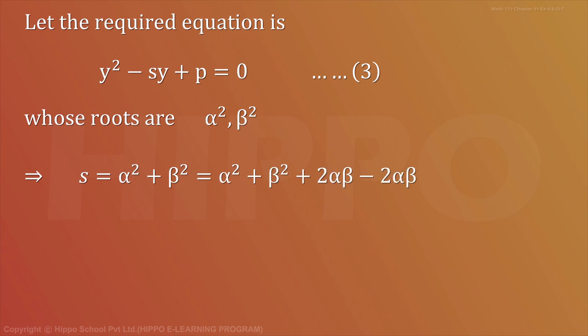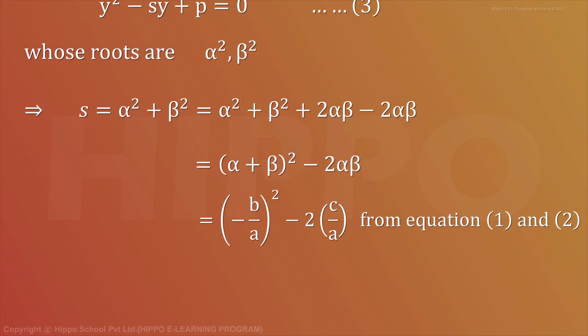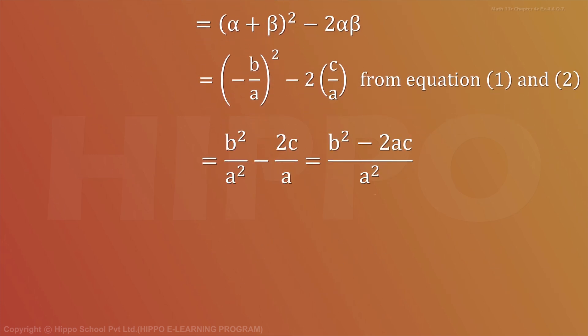تو s = α² + β², which is equal to α² + β² + 2αβ - 2αβ. ہم نے یہاں پر خود سے لکھ لیا. Equal to (α + β)² - 2αβ. α + β ہمارے پاس equation 1 سے کیا آرہا ہے: (-b/a)² - 2(c/a) = b²/a² - 2c/a = (b² - 2ac)/a².